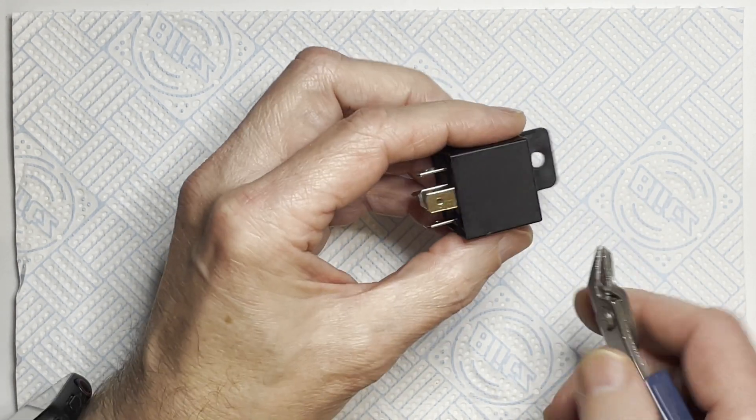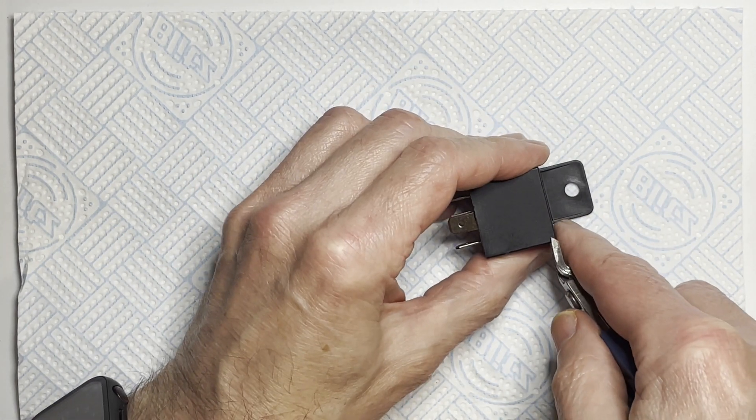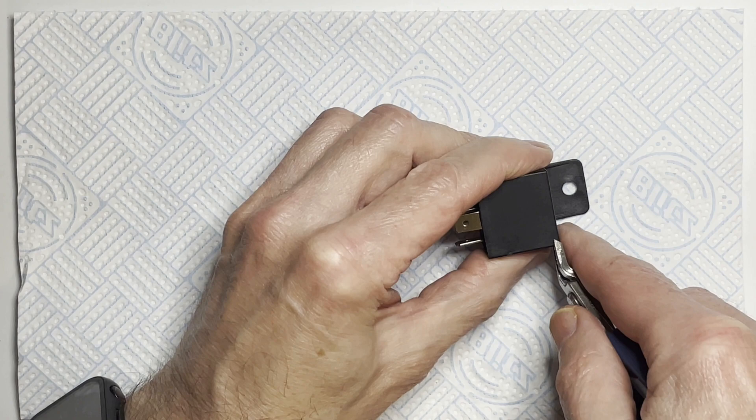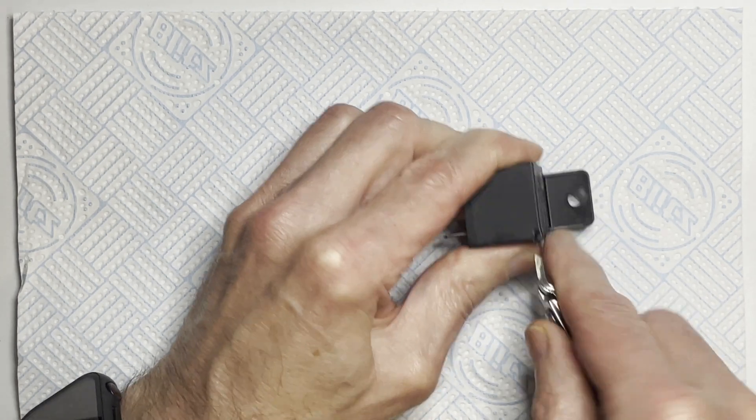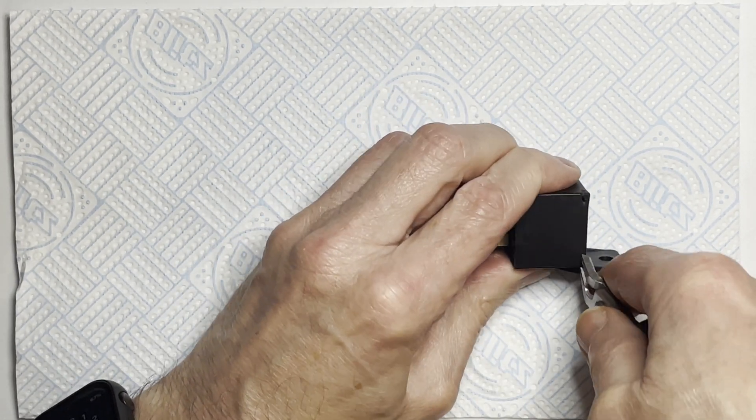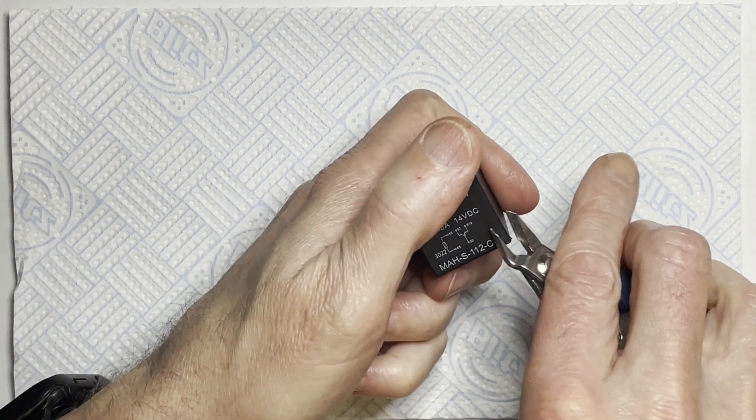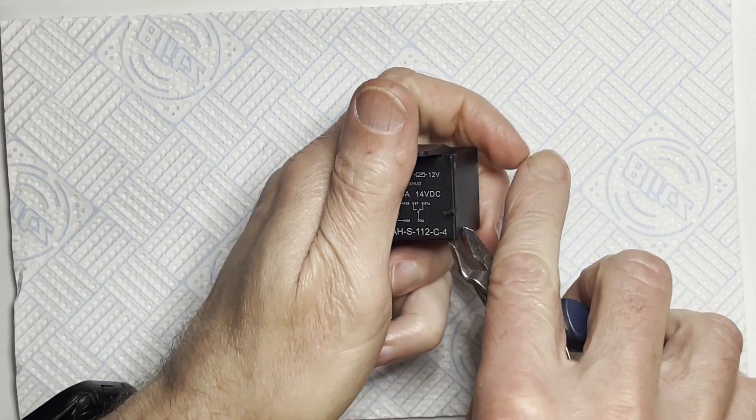Basically just a pair of pliers to start with. Start in the top corner of the case, just dig into it and then try and take a whole corner out if you can.